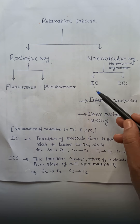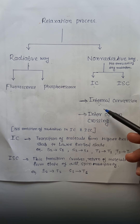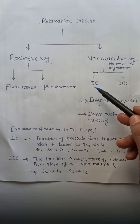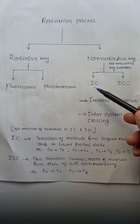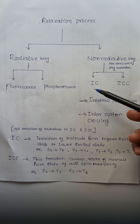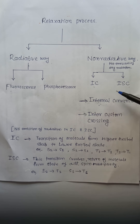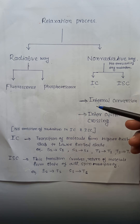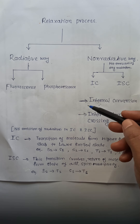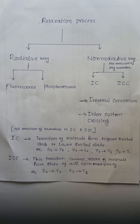The non-radiative way includes IC (internal conversion) and ISC (inter-system crossing). In IC, the transition of the molecule occurs from a higher excited state to a lower excited state. In ISC, the transition involves the return of the molecule from a state of different spin multiplicity — from the singlet excited state to the triplet excited state.